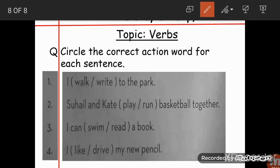The first one is walk. And let's read second: Suhail and Kate dash basketball together, play or run? Do you play basketball or do you run basketball? Very good, we play basketball. So obviously Suhail and Kate will also be playing, so it means you have to circle the correct one and that is play.